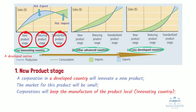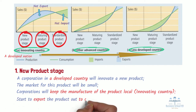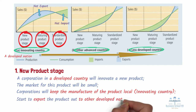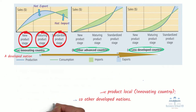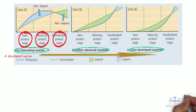As sales increase, corporations may start to export the product out to other developed nations to increase sales and revenue. This is a straightforward step towards the internationalization of a product because the appetites of people within developed nations tend to be quite similar.